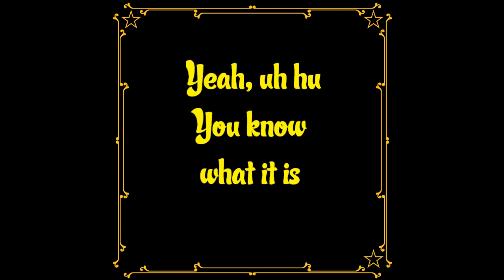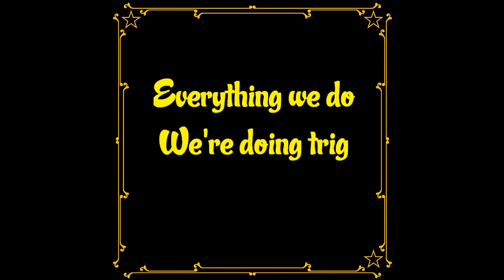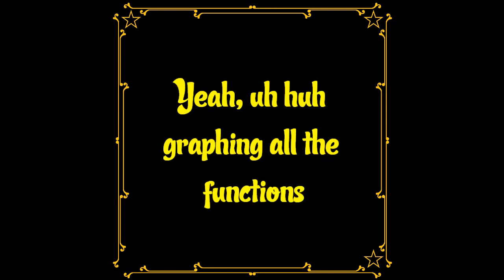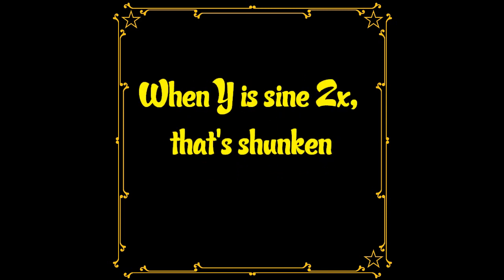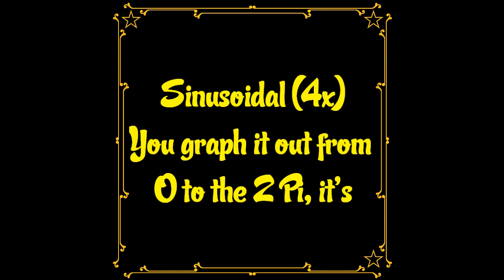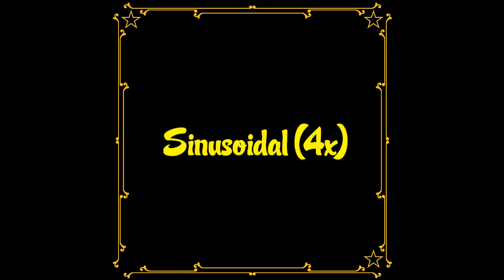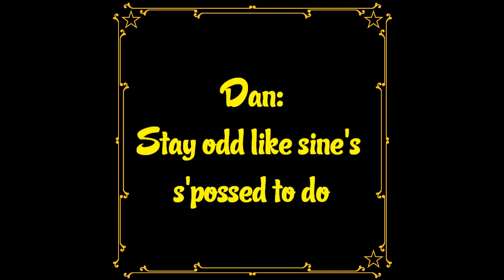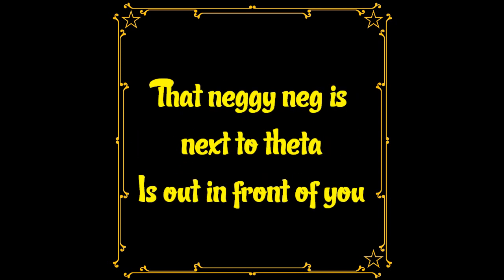You know what it is — everything we do, yeah, we're doing trig. Wrapping all the functions. When y is sine to x, x that's shrunken. Unitical — when you see it, you know everything. Sinusoidal, sinusoidal — you graph it out from zero to the two pi.